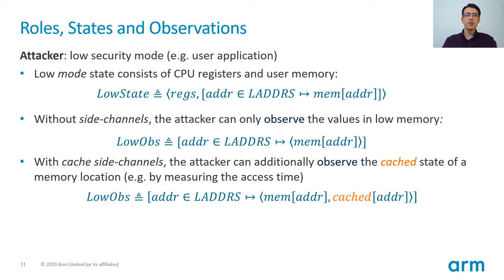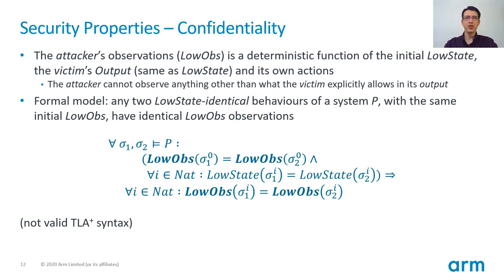We have not explicitly included time as a state in this model. However, we define the attacker observable state as a function mapping low addresses to both the values in memory and the cached state. Because of the access-ok operator defined earlier, the model does not permit the attacker to directly observe any high memory locations. Confidentiality is a non-interference property stating that the attacker cannot observe anything other than what the victim allows in its output. In other words, the attacker's observation is a deterministic function of only the initial state, the victim's output, and its own actions.